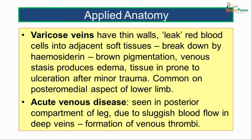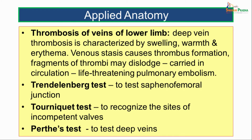Acute venous disease is seen in the posterior compartment of the leg due to sluggish blood flow in the deep veins. This sluggish flow over time gives rise to formation of venous thrombi. Deep vein thrombosis is characterized by swelling, warmth, and redness or erythema. The venous stasis causes thrombus formation, and fragments of these thrombi may get dislodged, carried in the circulation, and give rise to life-threatening pulmonary embolism.